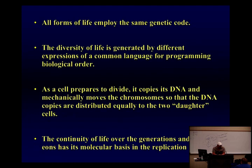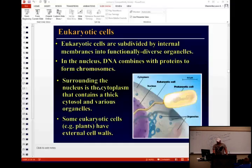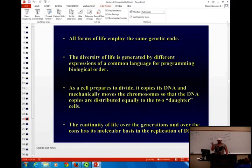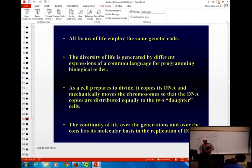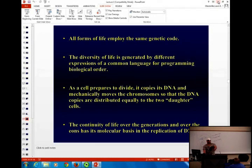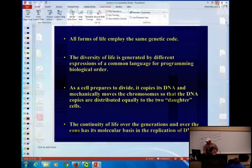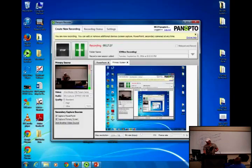We can take genes from jellyfish and put them into zebrafish and make them glow. We can take a gene that makes human insulin and put it in a bacteria, and people can take that as insulin. Genetically modified organisms are plants that have genes from bacteria that make them resistant to certain insects or resistant to Roundup herbicide. We can add genes to things and we can also take genes away.